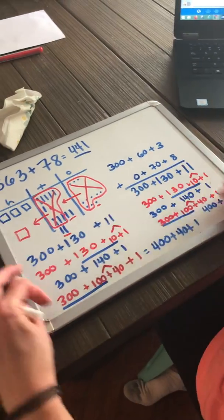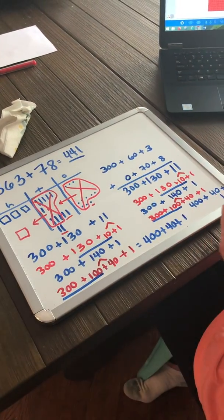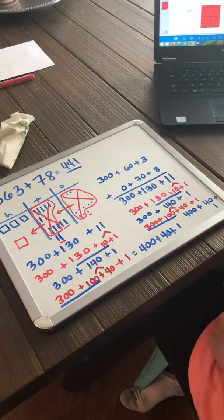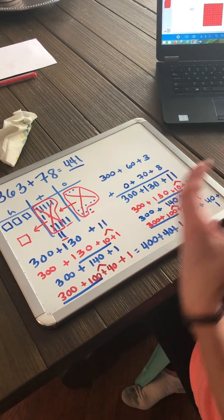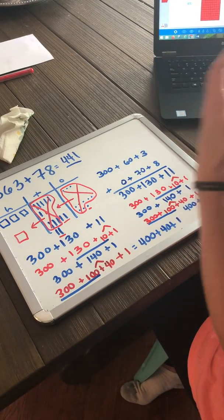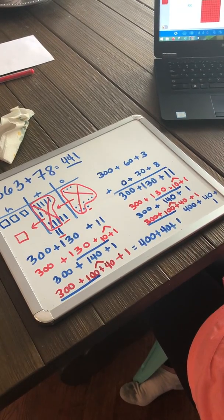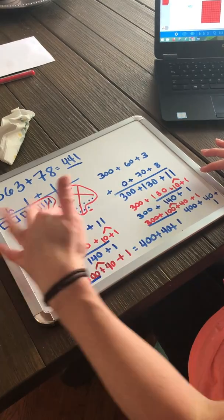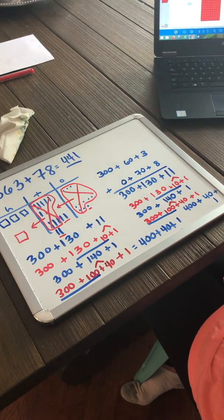Today, you're going to practice regrouping a group of 10, either 10 10s for 100 or 10 1s for a 10. And you're going to exchange those. You can use pictures or you can use expanded form.